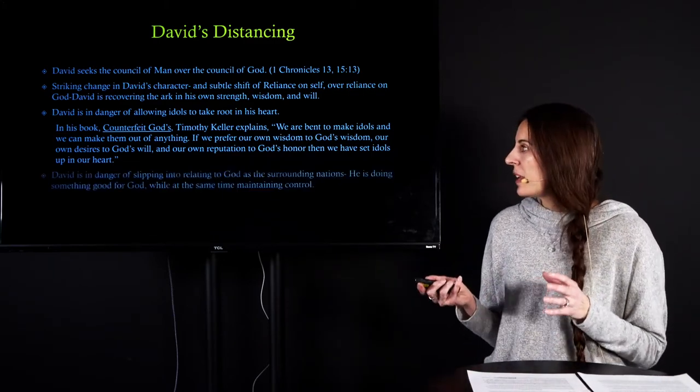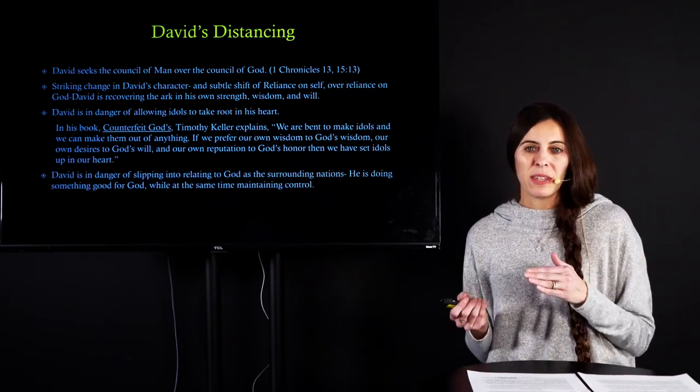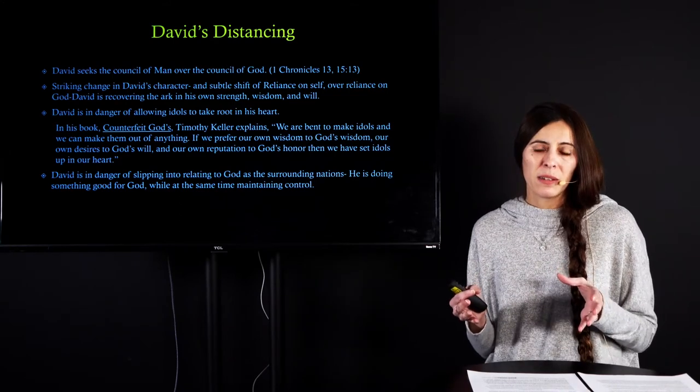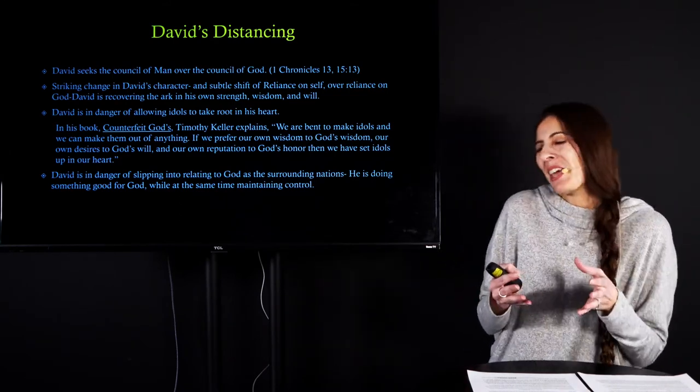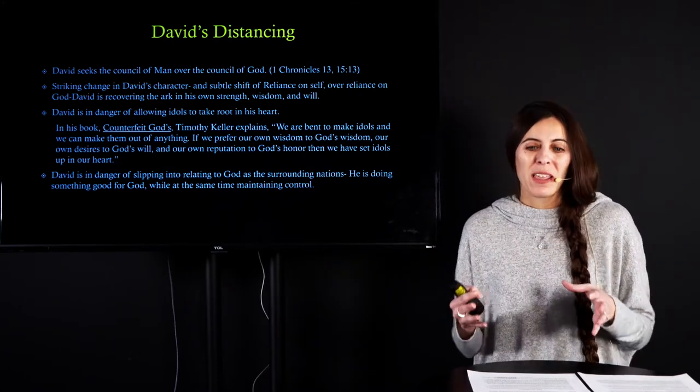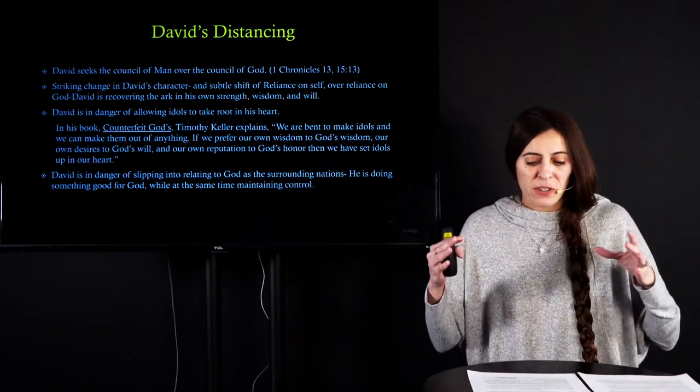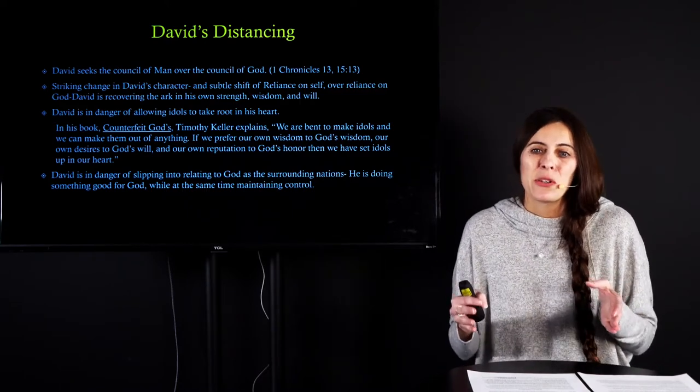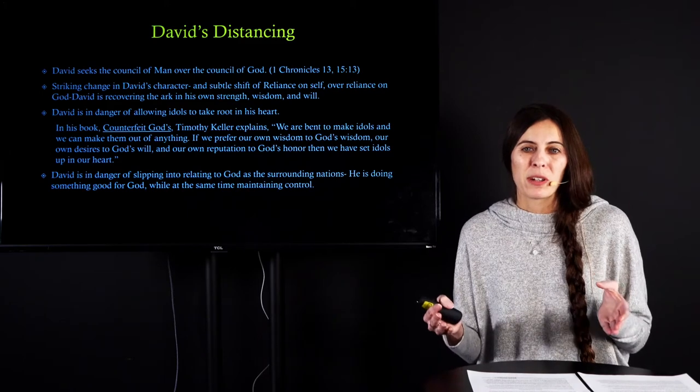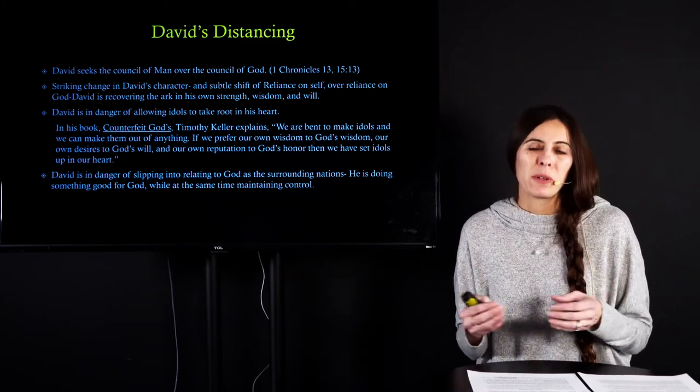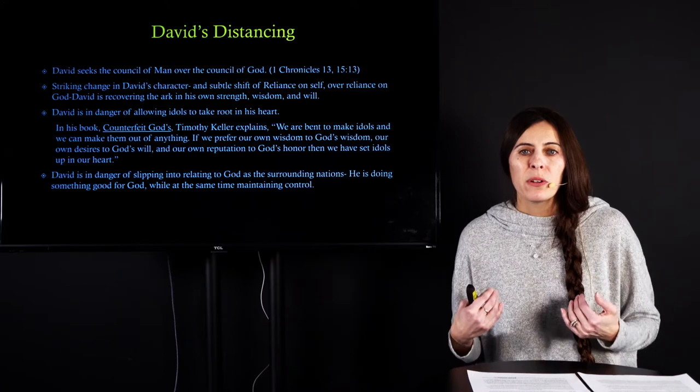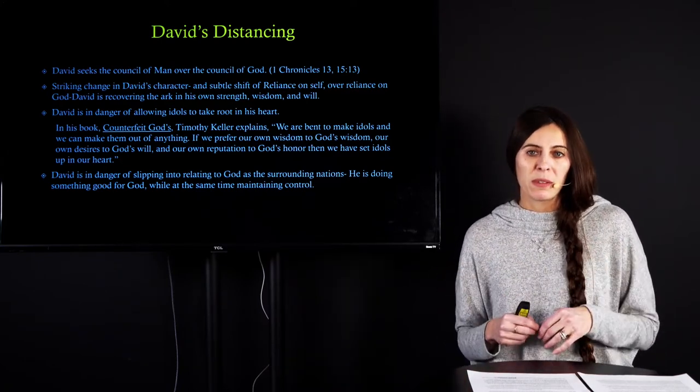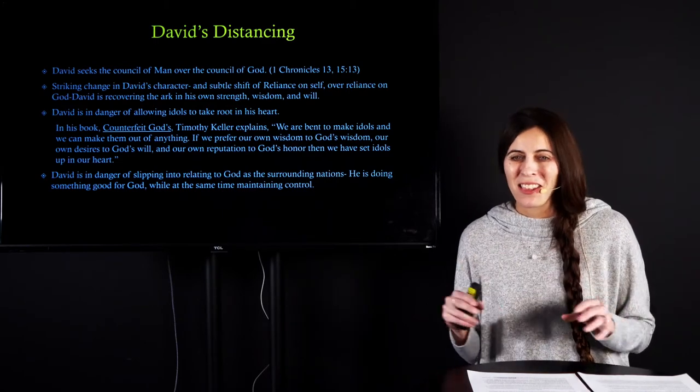And if we prefer our own wisdom to God's wisdom, our own desires to God's will, or our own reputation to God's honor, then we have set up idols in our hearts. And I think David is in danger. I think he's right on the edge of slipping into relating to God the way all the other foreign nations relate to God. And that the other foreign nations, when they sought their gods, they were devoted and they did good things for their gods, but they did it in order to be blessed. They did it to get leverage and control over their gods. There was a quid pro quo relationship.